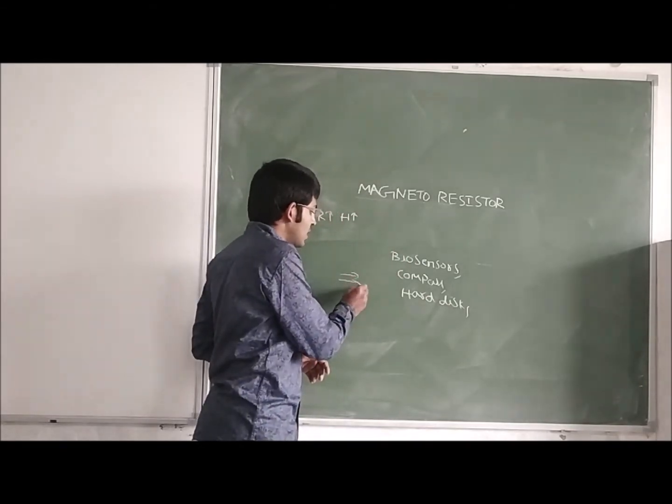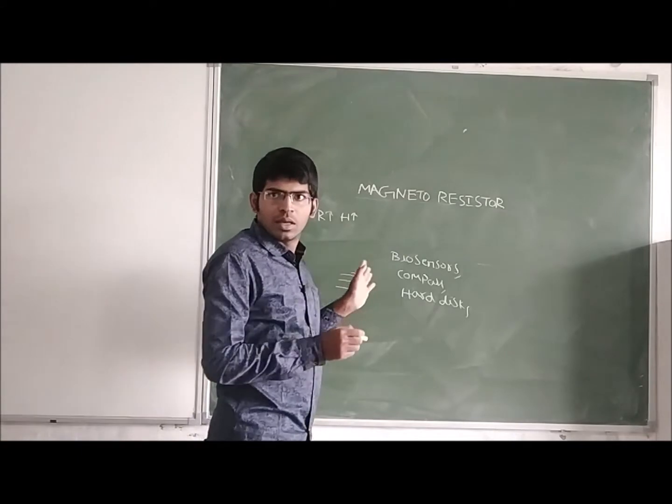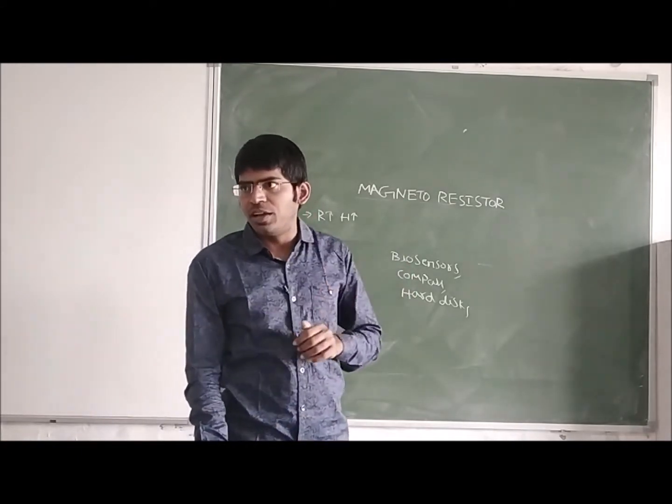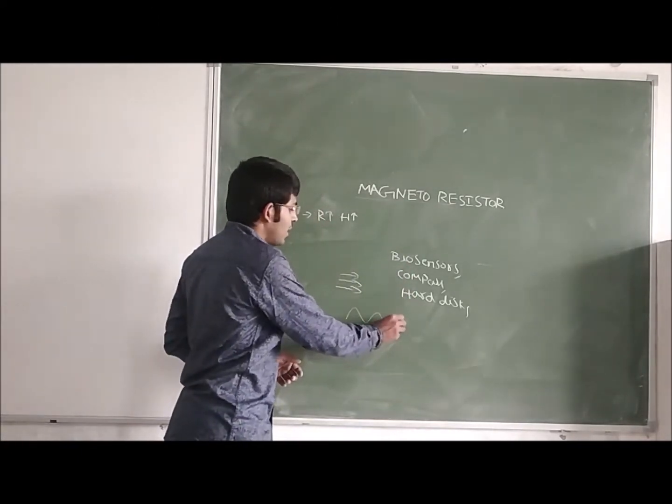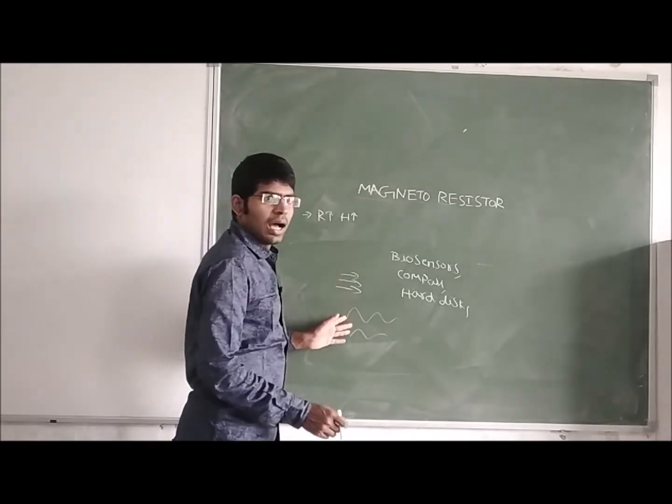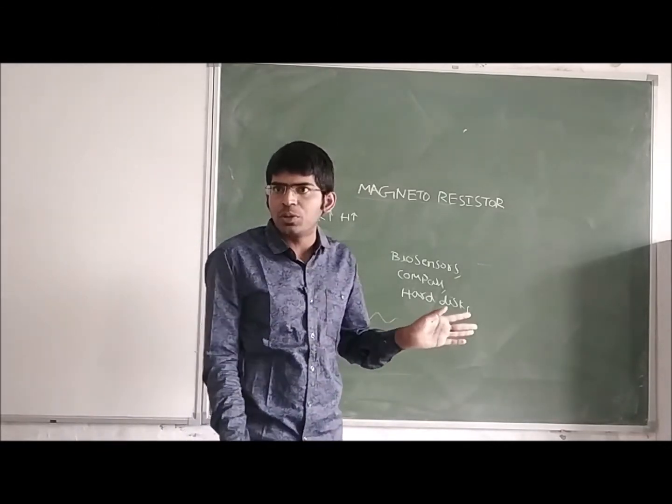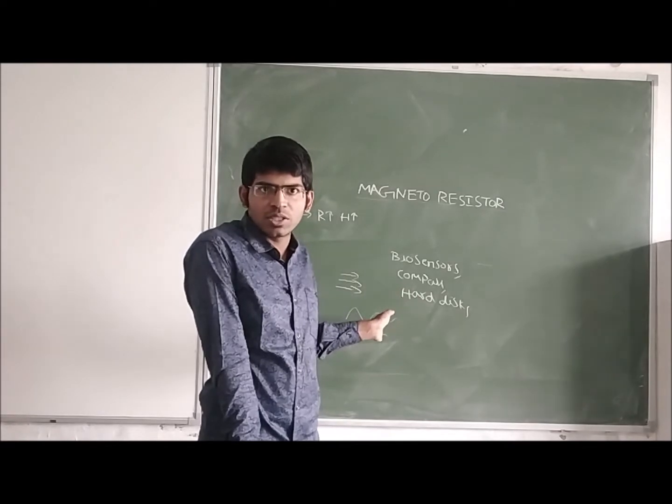For example, if the electric field lines are like this, in absence of the magnetic field, in the presence of the magnetic field, the electric field lines are the signal which we observe. Because of this magnetoresistor will be different.